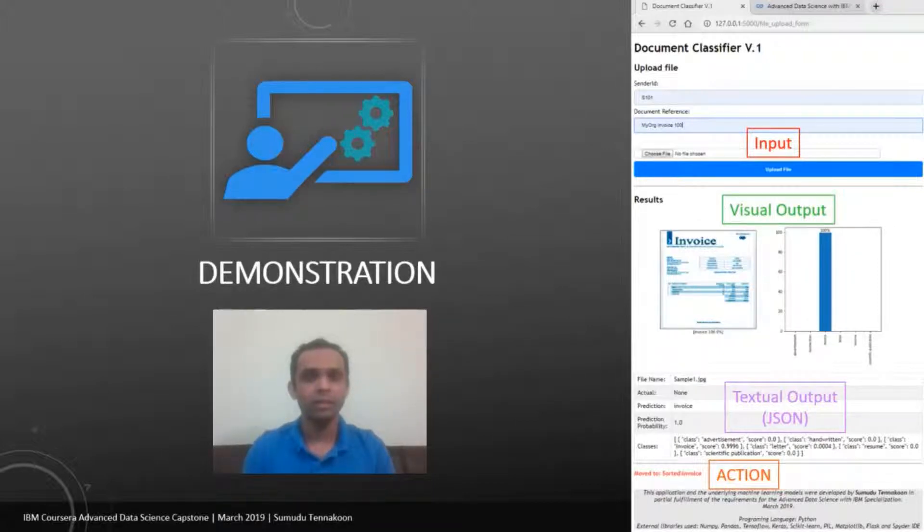First, take a look at the web application. Here you will see a screenshot. In the screenshot, you will see the input area and after you input the image, you will see the visual output and the textual output. And then the action is also displayed. The action means which folder you place this document. And in this API call, the return value will be a JSON output. You can also use this API without the web browser. You can call it in another Python or any other program to return a JSON output of it.